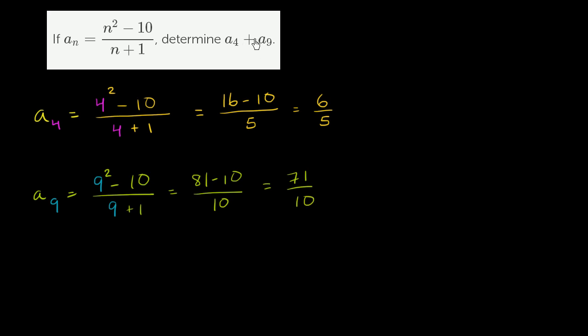Now they want us to sum these two things. So that's going to be equal to 6 fifths, a sub 4 is 6 fifths, plus a sub 9, which is 71 over 10.